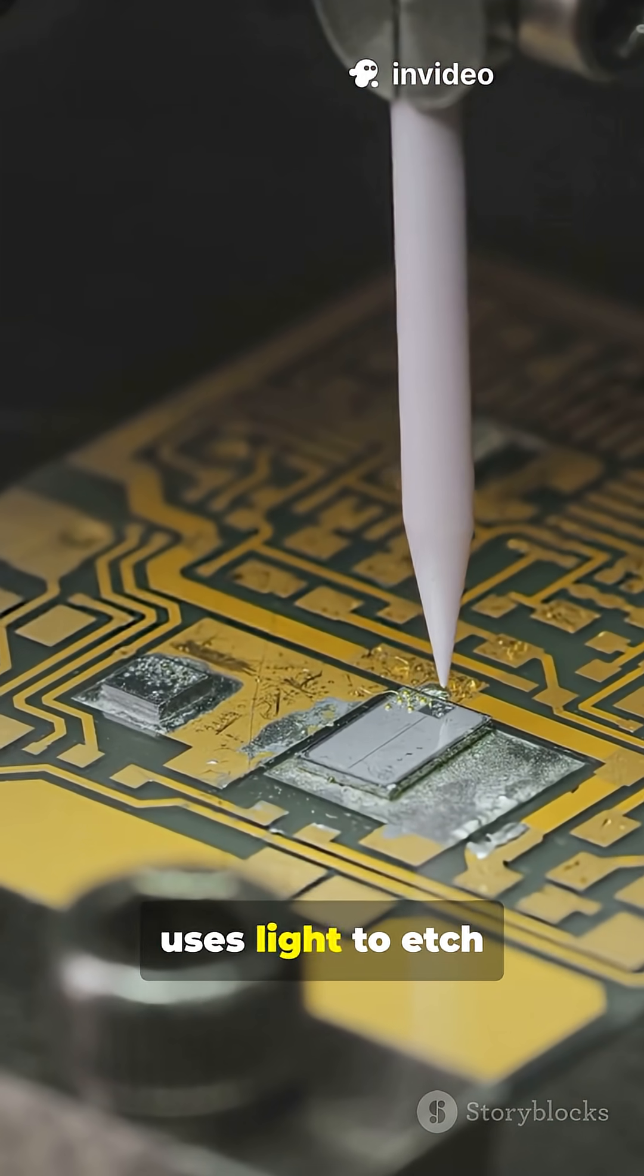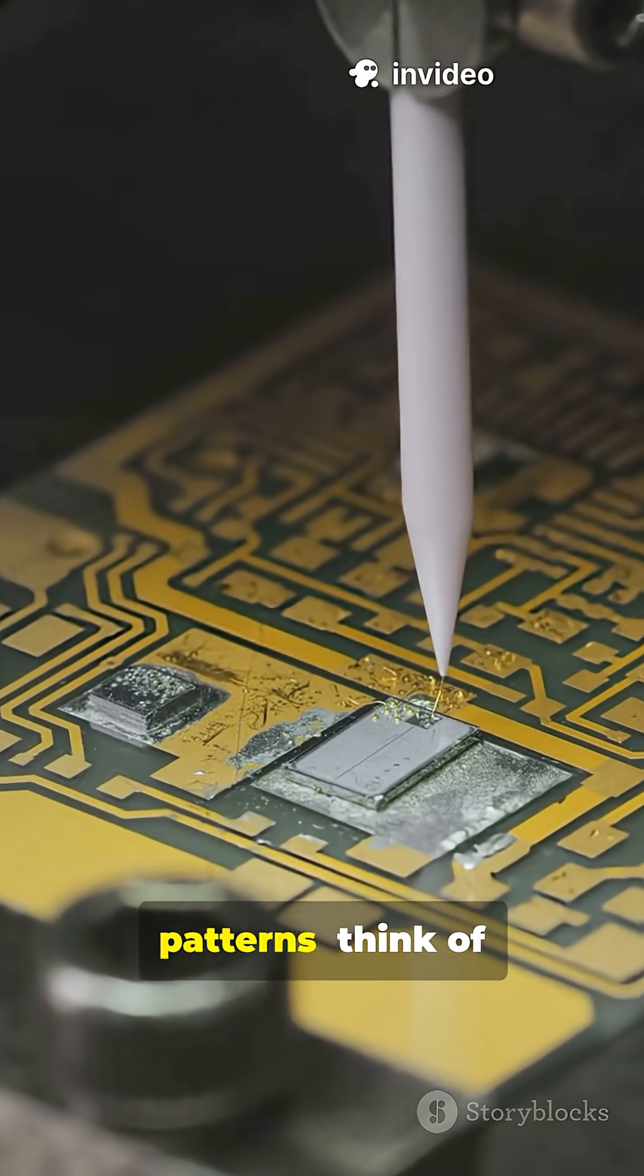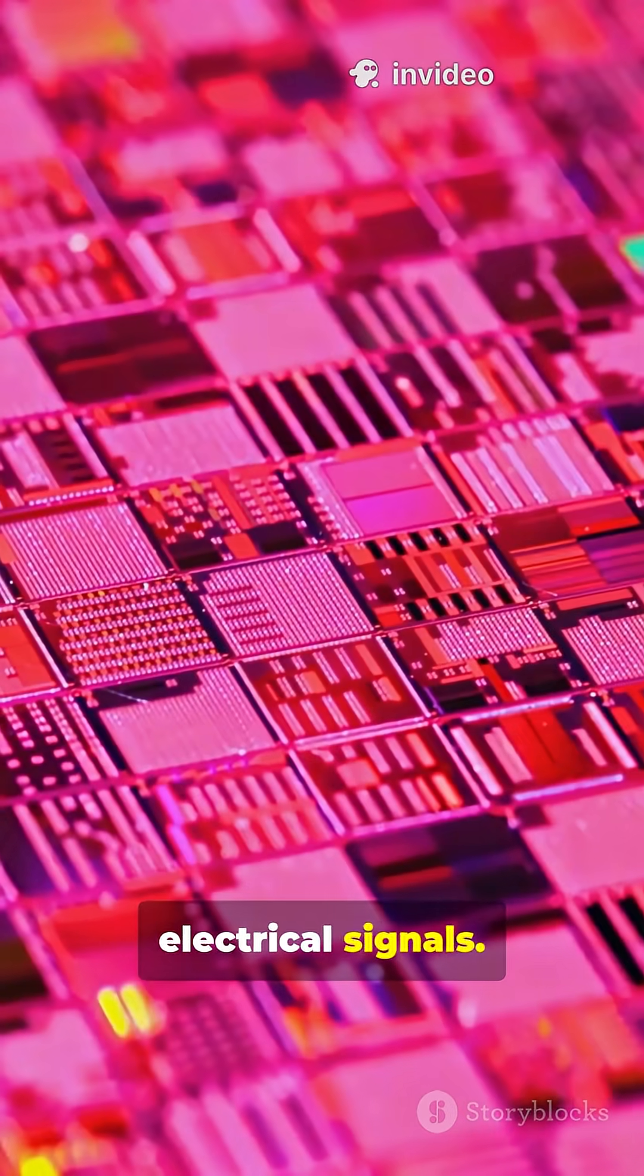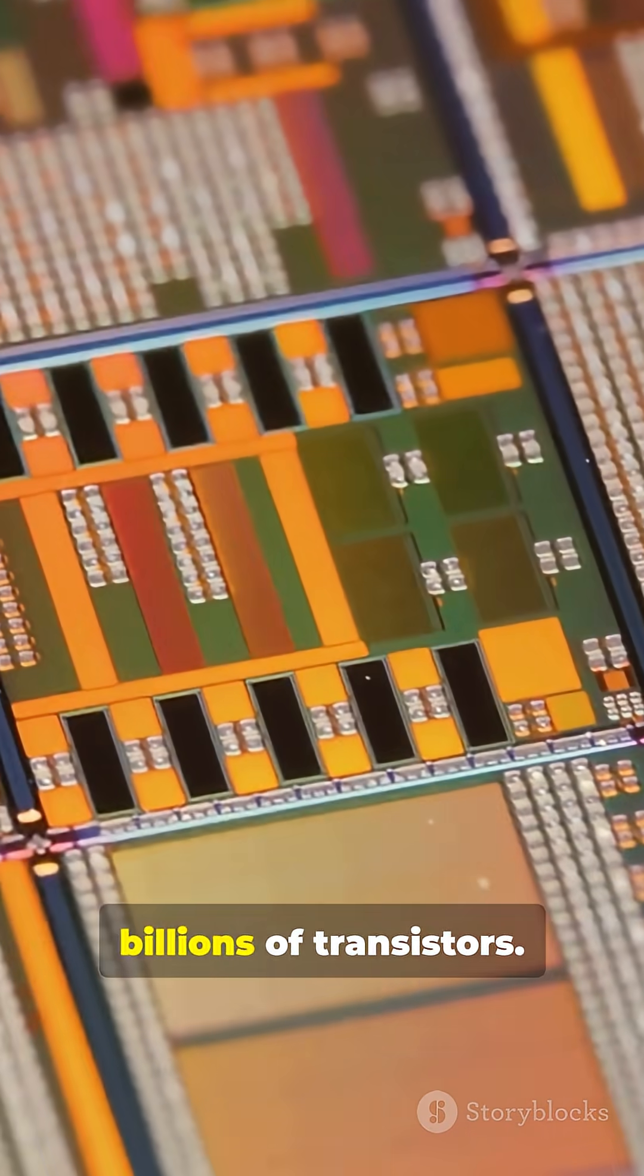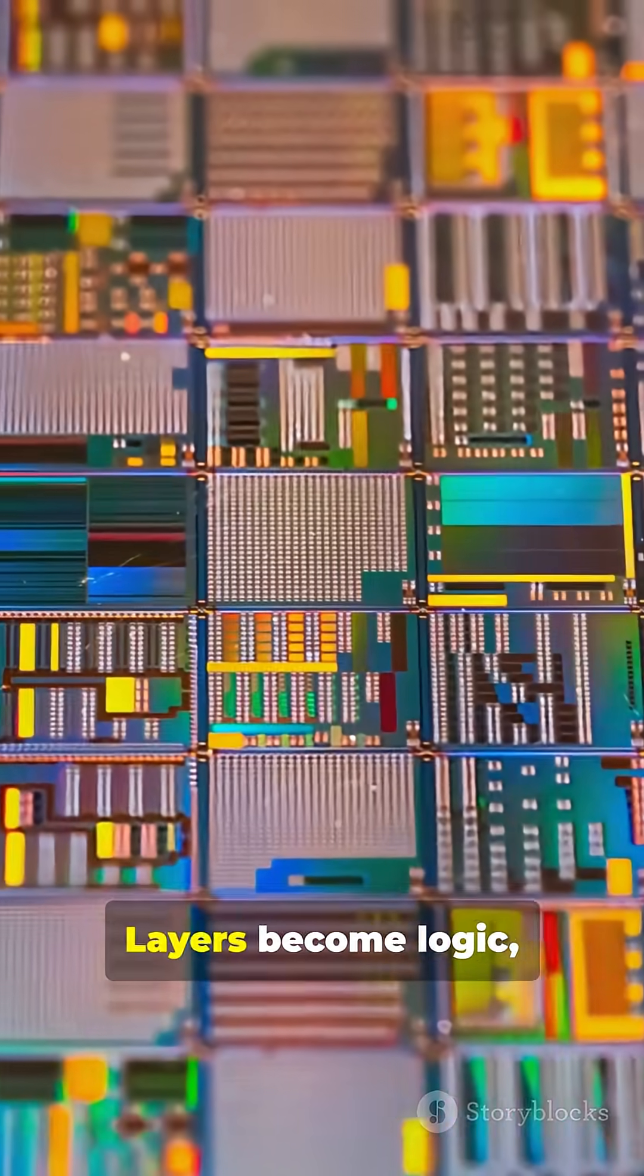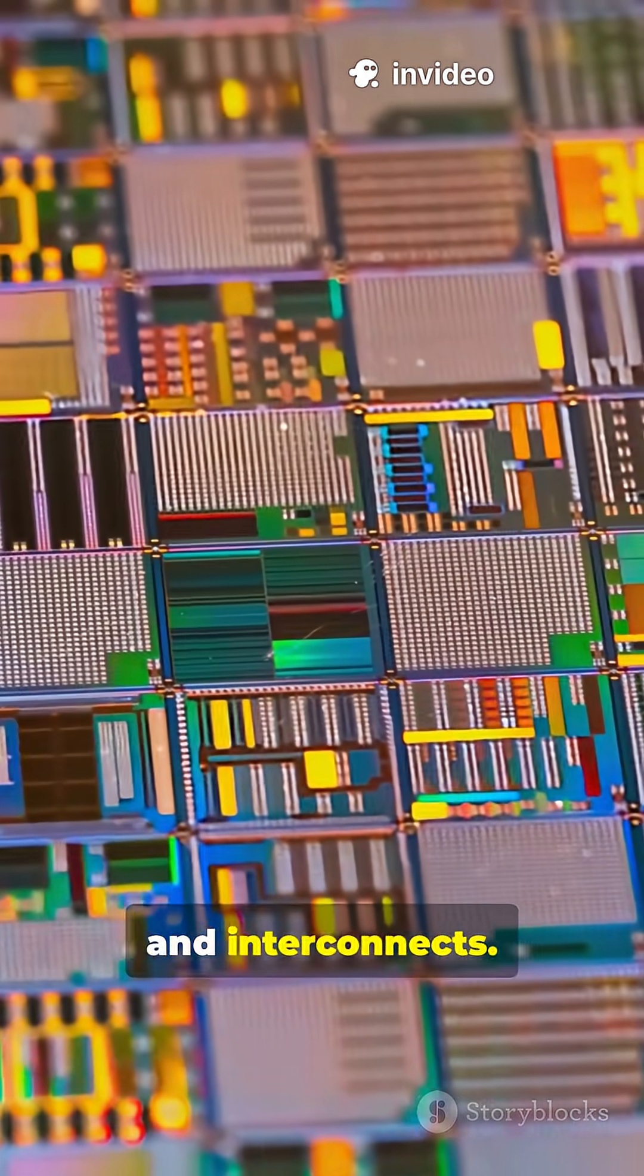Next, photolithography uses light to etch microscopic patterns. Think of it as printing tiny highways for electrical signals. Layers of metals and insulators are added, building up billions of transistors. Layers become logic, memory and interconnects.